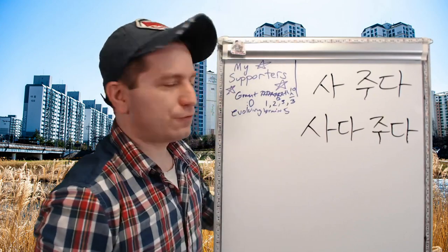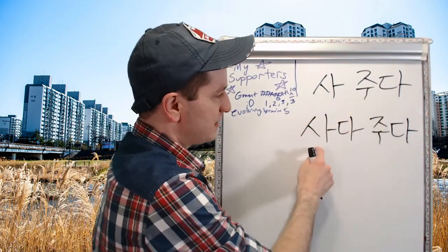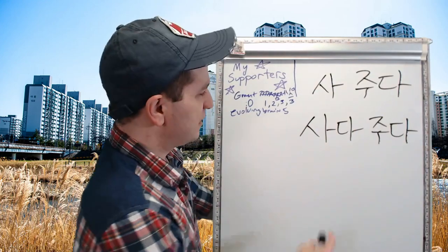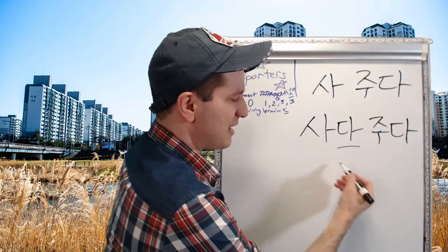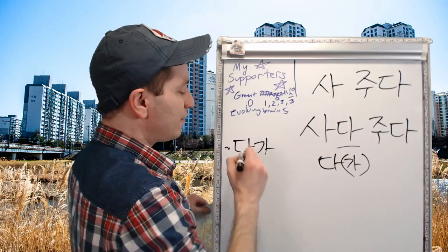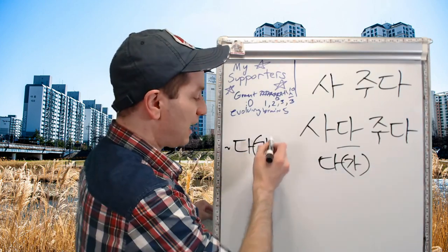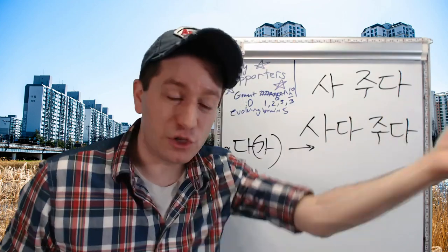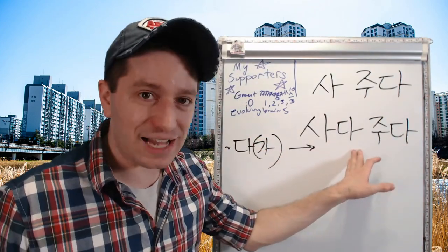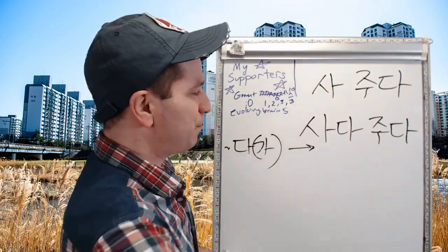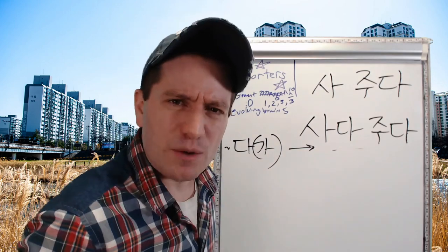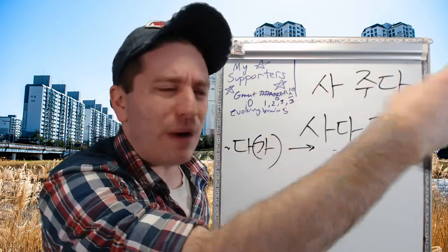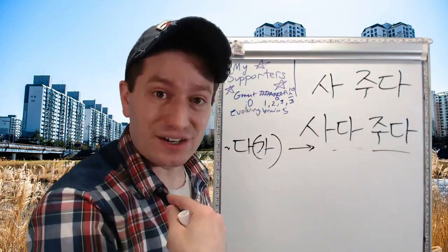Here are two forms: 사주다 and 사다 주다. 사주다 means to buy something for someone. 사다 주다 — this 다 is actually the same as 다가, and whenever you're using any 다가 form, the 가 is always optional. 이거 좀 사줘 means 'buy this for me, please.' But 사다 주다 means you're buying something, bringing it somewhere else, and then giving it to someone — like saying 'go buy it and then bring it here and give it to me.'